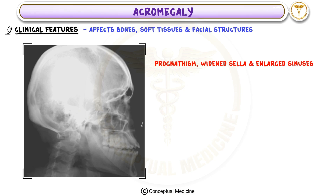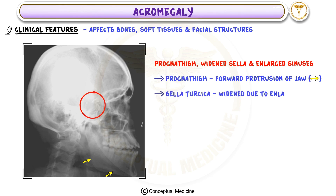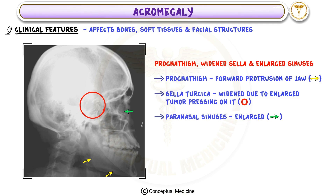Prognathism refers to the forward protrusion of the jaw, giving patients a characteristic facial appearance. The sella turcica, which houses the pituitary gland, becomes widened due to the enlarged tumor pressing on it. The paranasal sinuses also become enlarged, contributing to the coarse facial features seen in these patients.